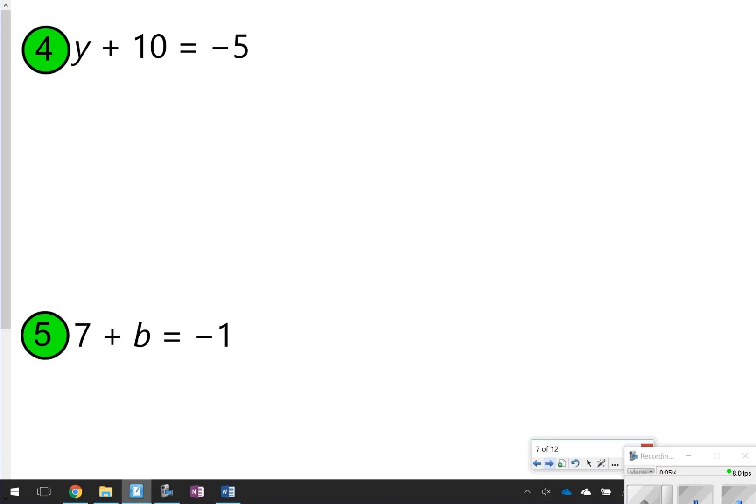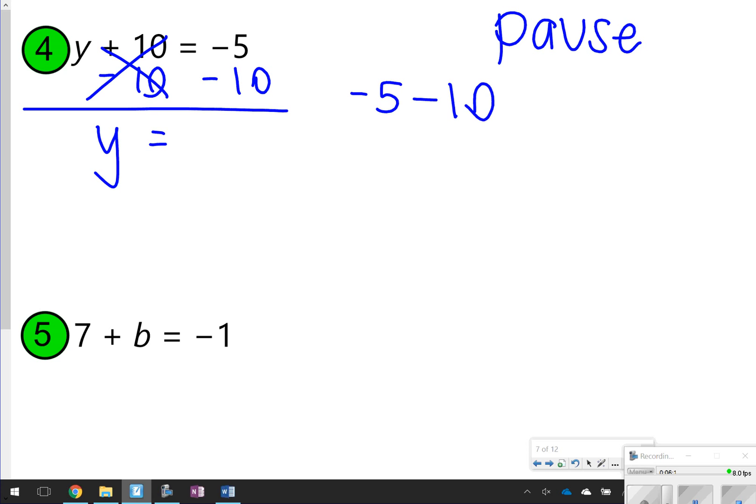The next two you're going to try on your own as well. Same type of rules here. Show the opposite operation and then solve it. Go ahead and pause to try. Once you're done, click play. All right. So for number 4, I see y + 10. The opposite of +10 would be -10. So I'm getting that 10 away from the y. Whatever I do to one side, I will also do to the other side. Notice I have here crossed off or canceled out the +10 -10. So all I have left is y. But now I have this thing over here, -5 - 10. Another way to look at that, -5 - 10 is also the same thing as -5 + (-10). So you're basically just adding the two negatives together. What is -5 and a -10 going to give you? That's going to give you a -15. So y = -15 for number 4.